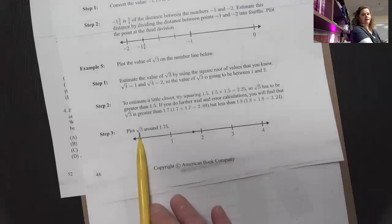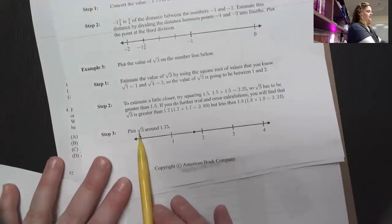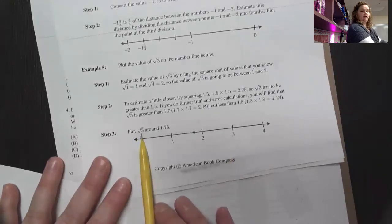you might come into a hiccup with is when it's a square root. Okay, so remember that's what number times itself to get 2 to 3, so you just got to get close.